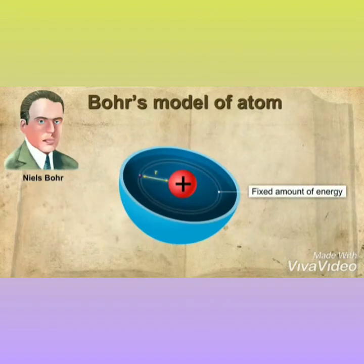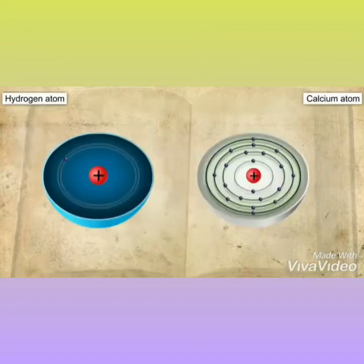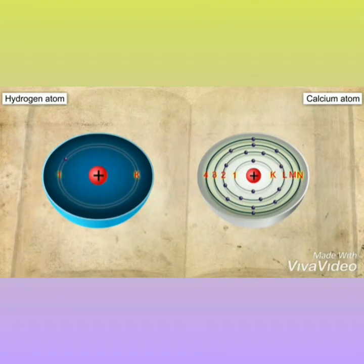These orbits with a fixed amount of energy are known as discrete orbits or energy levels. These energy levels are represented by the letters K, L, M, N or the numbers 1, 2, 3, 4 starting from the center.